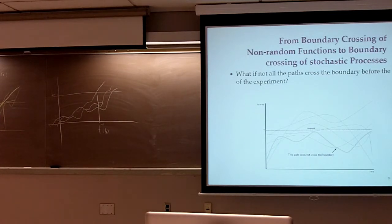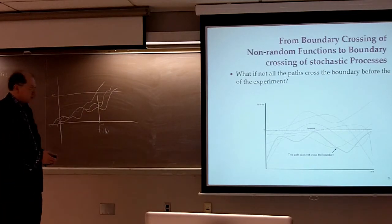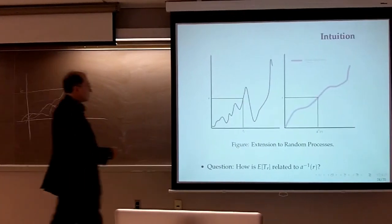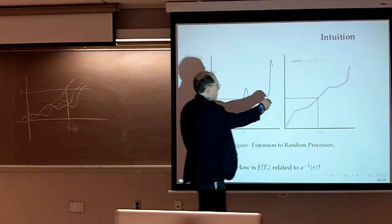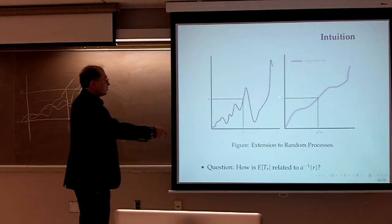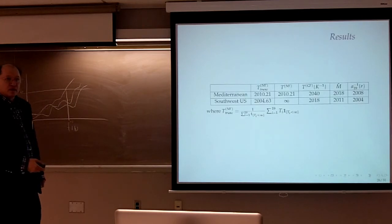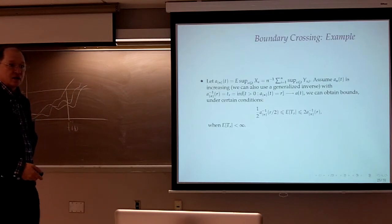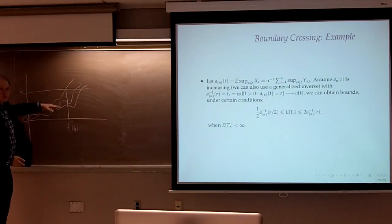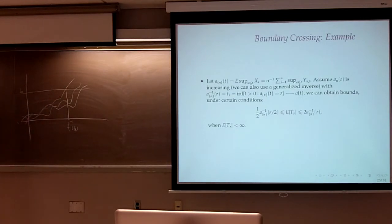Let me just summarize what I am saying. What I am saying is that there is a new way of extending the concept of boundary crossing of non-random functions to stochastic processes. And the way is by looking at the paths of the supremums and then taking averages. From that, you take the inverse. This is the stochastic process. I look at the expected value of the supremum of the process. And I look at the inverse when the process hits the boundary.